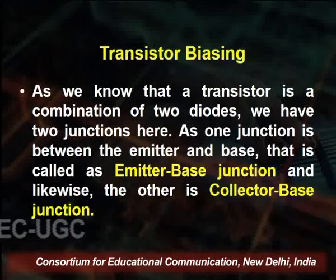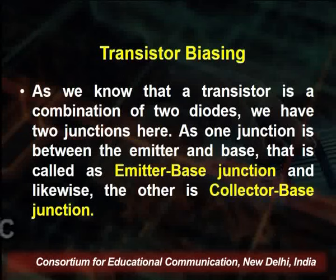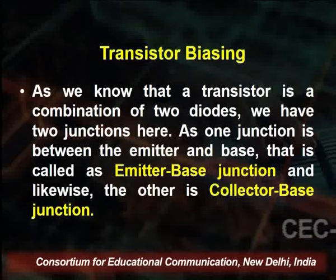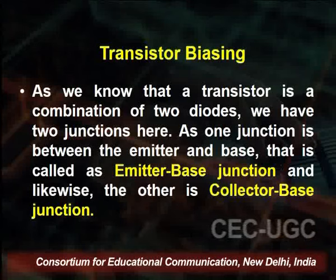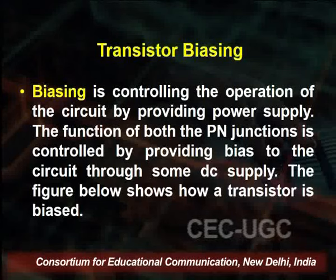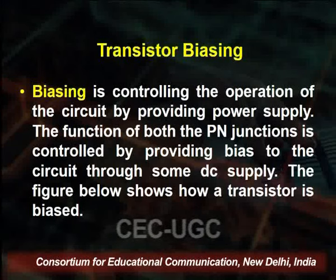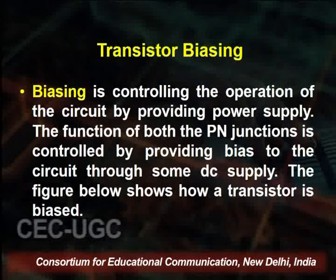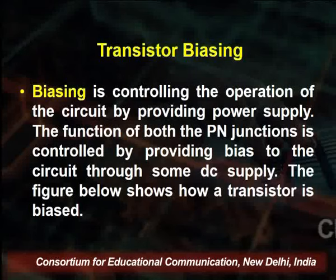Transistor biasing: the transistor is a combination of two diodes with three terminals and two junctions. One junction is between the emitter and base — called the emitter-base junction — and the other is the collector-base junction. In transistor biasing, we control the operation of the circuit by providing a power supply. It may be forward biasing or reverse biasing. The function of both PN junctions is controlled by providing bias to the circuit through a DC supply.